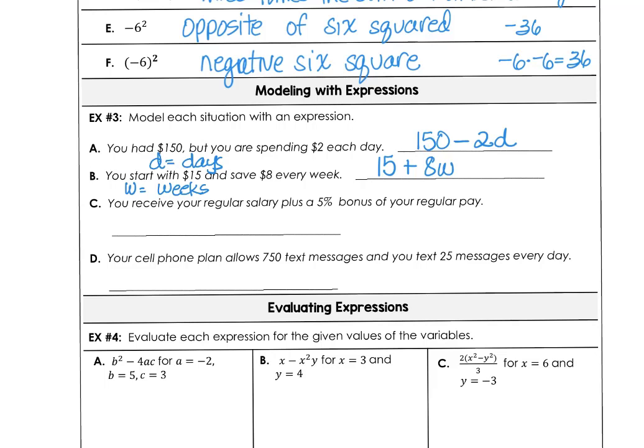On part C, if you receive your regular salary plus a 5% bonus of your regular pay, let's let the letter S represent your salary. So how are you getting paid algebraically? You get your regular salary plus you get 5%, and 5% is 5 divided by 100. So that's decimal 0.05, and it's 5% of your regular salary, which is S.